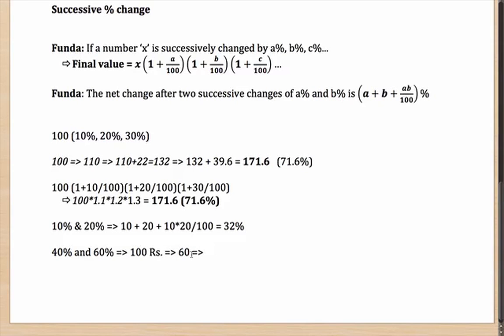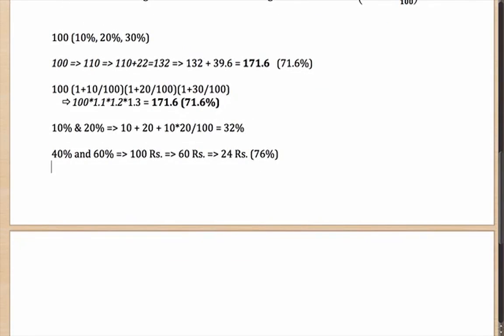40 rupees discount to get to 60 rupees. Another 36 rupees discount to get to 24 rupees, which if you notice, is a net of 76 percent. Now, let's do it by the formula, which is A plus B plus AB by 100.